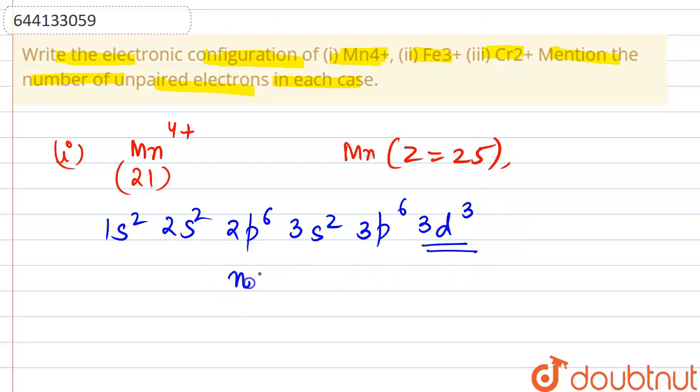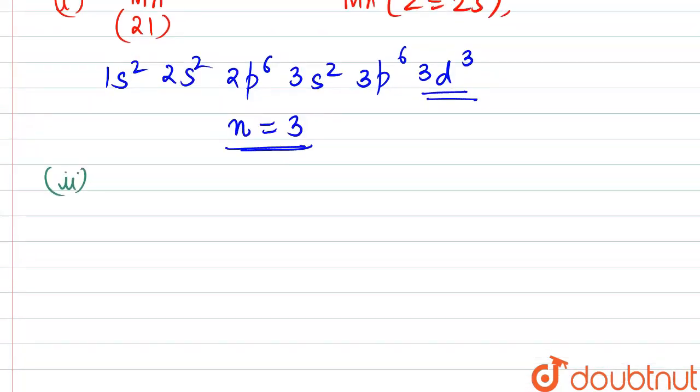Talking about the second one, Fe3+. In the case of Fe3+, we can see the atomic number of iron is 26. In Fe3+ we are having how many electrons? 23 electrons.